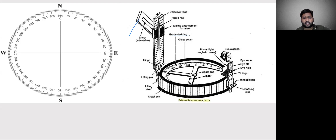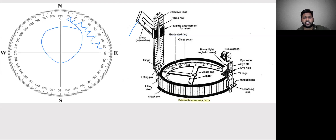This is the graduated ring. In the prismatic compass, the values on the graduated ring go from 0 to 360 degrees. If you observe the graduated ring, you see values of 10, 20, 30, 40, 50, 60, 70, 80 degrees and so on, totaling 360 degrees. This graduated ring is covered with a glass cover so that when you are doing a survey, even if it rains, the graduated circle is not disturbed.